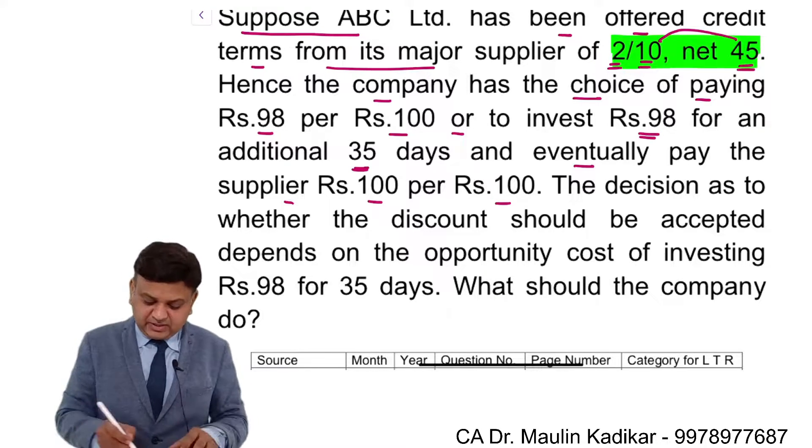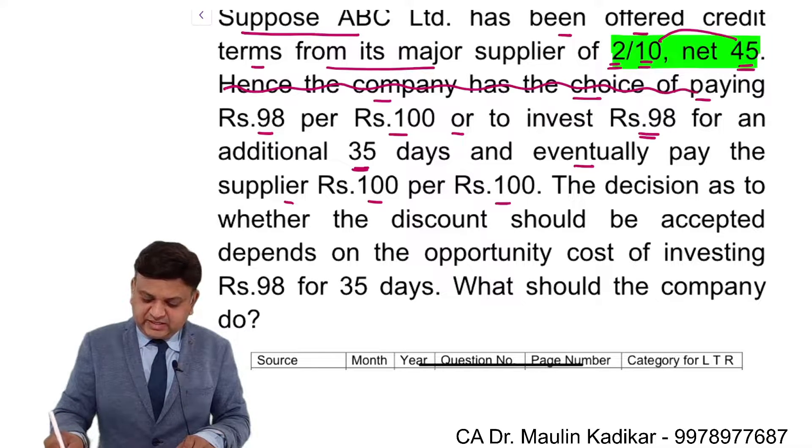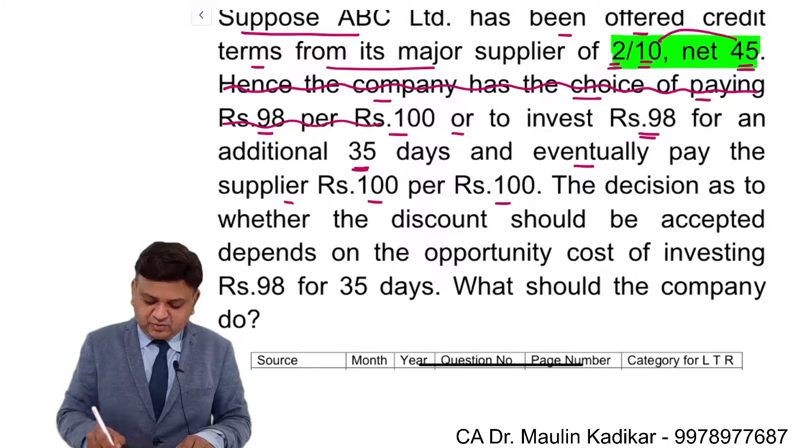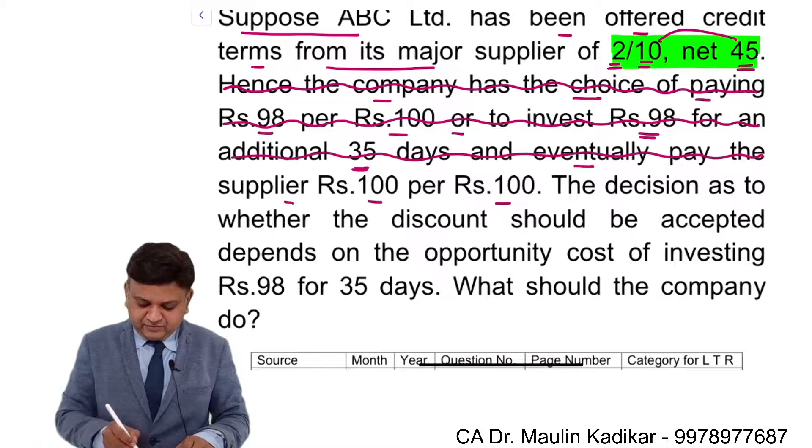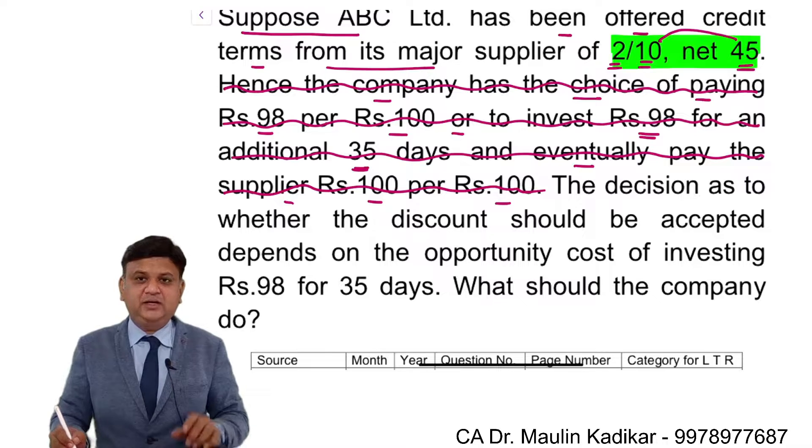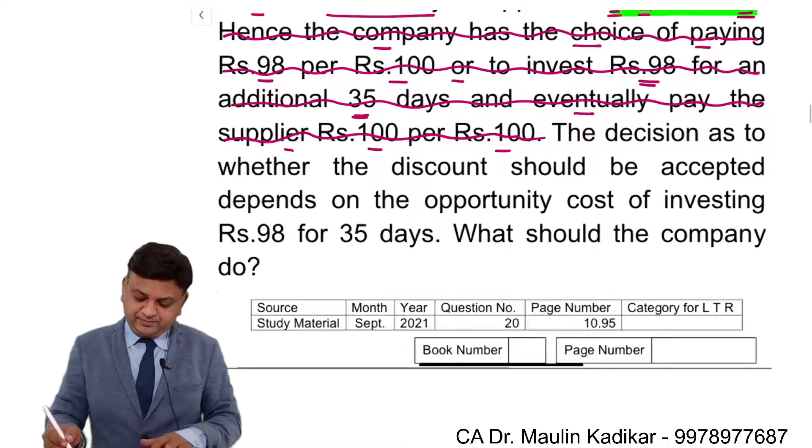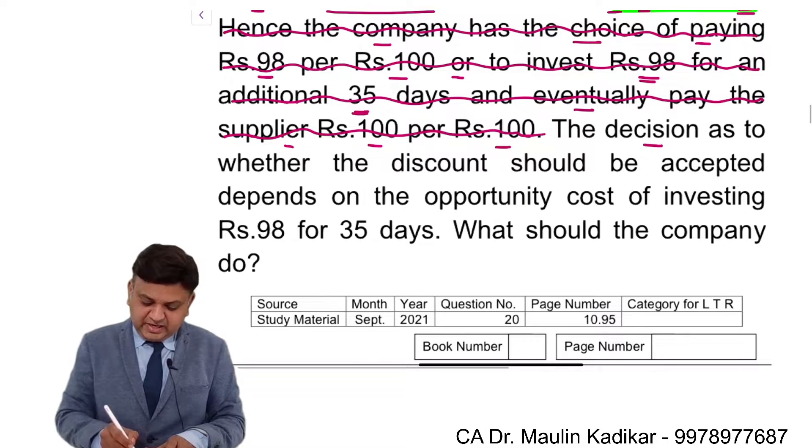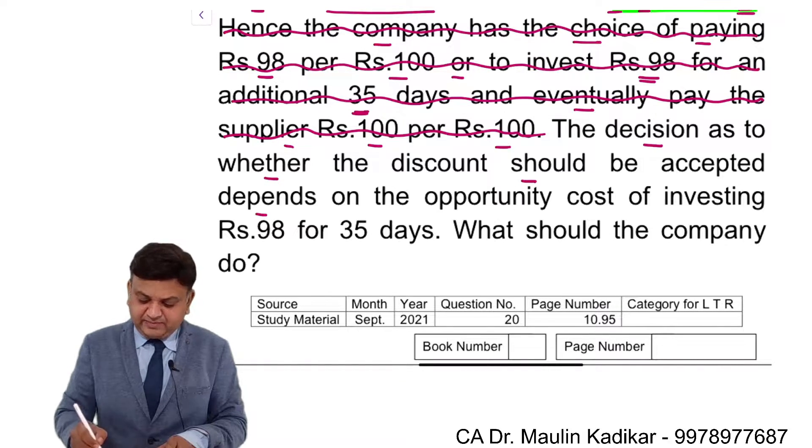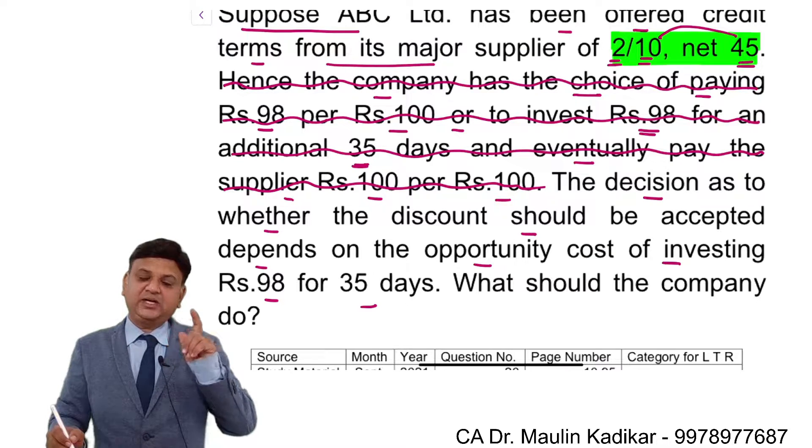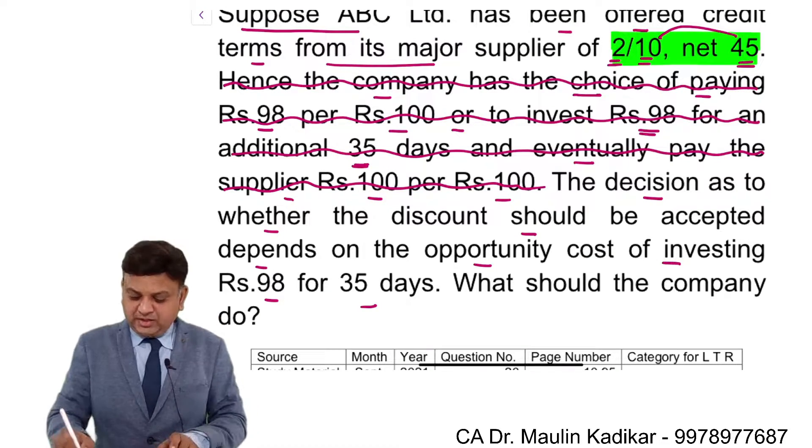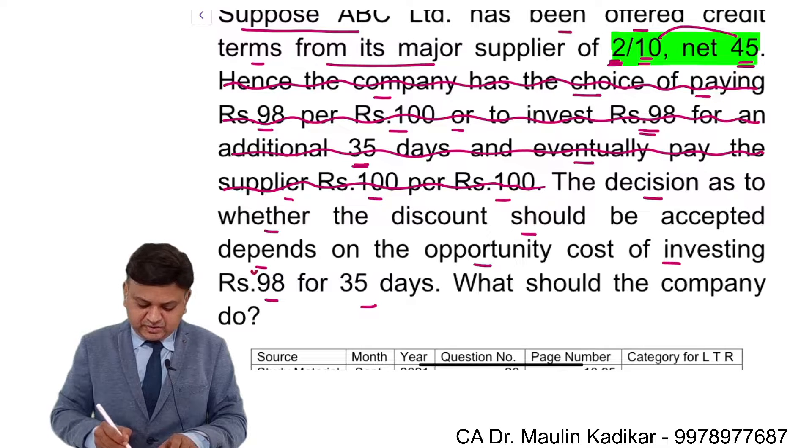So this is what they have explained in the question. Basically this explanation information which is given to us is of no use to us. Why? Because we understand this is what we should understand with the term 2 by 10 net 45. The decision as to whether the discount should be accepted depends upon opportunity cost of investing Rs. 98 for 35 days. 98 is calculated considering invoice amount of 100. So 100 minus 2 percentage, that comes to 98, and 35 is the difference of 45 minus 10.